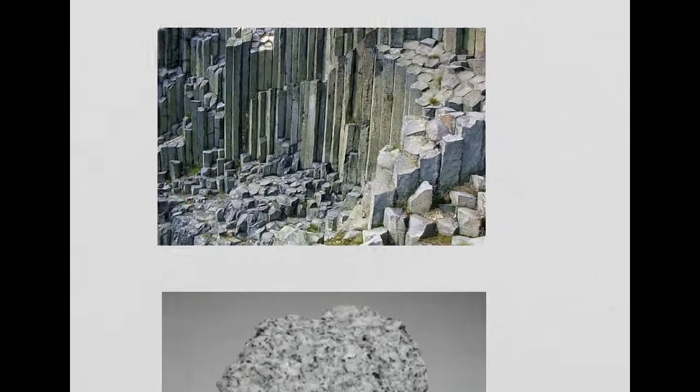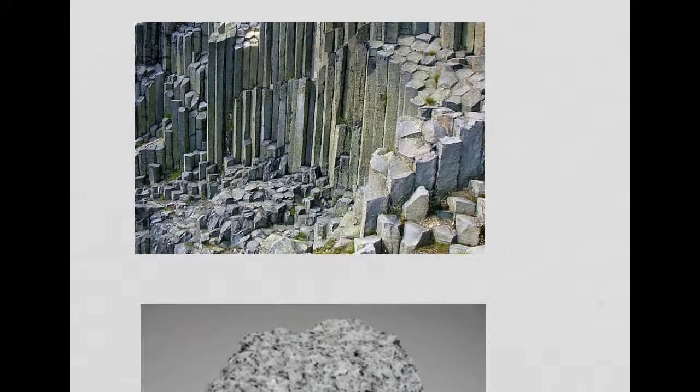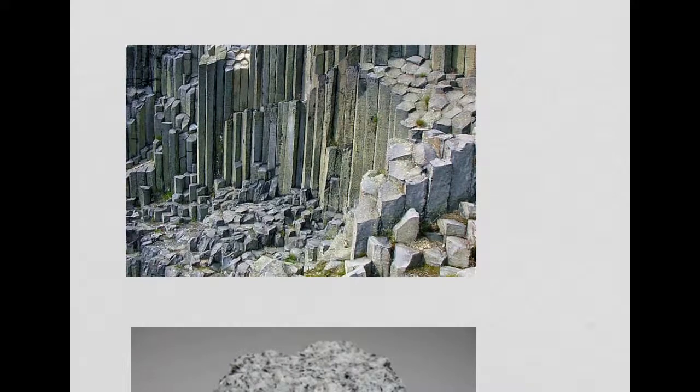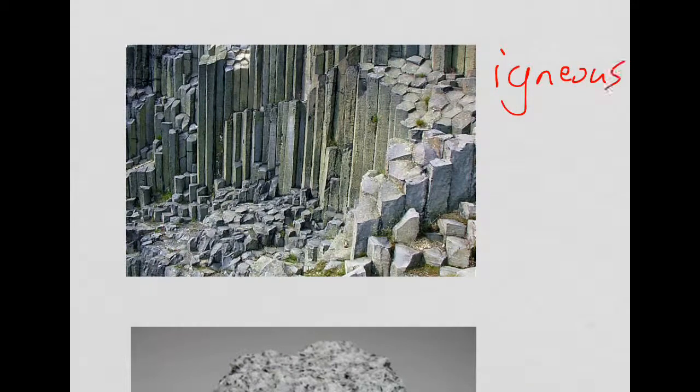If we come across and have a look at this picture, this is quite clearly an igneous rock. You may recognize it as the Giant's Causeway. The magma has made its way above the surface. When magma makes its way above the surface, it's called an extrusive rock.